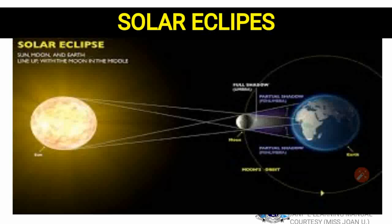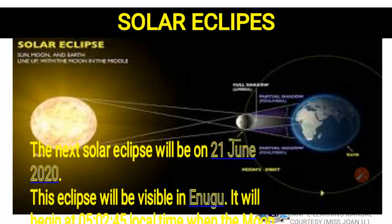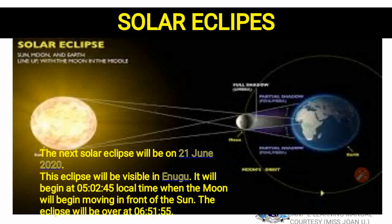It is called solar eclipse. The next solar eclipse will be on the 21st of June 2020. It will be very visible, and will start at about 5 o'clock. Scientists have predicted this is going to happen at that date.